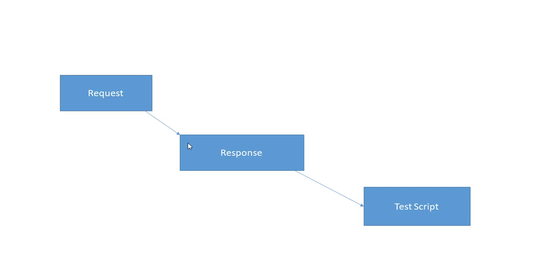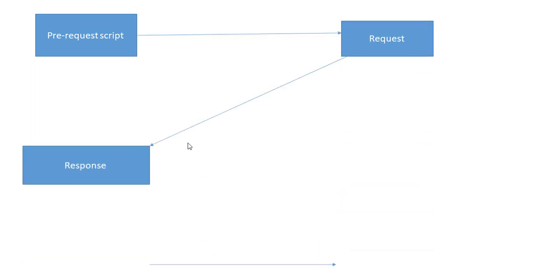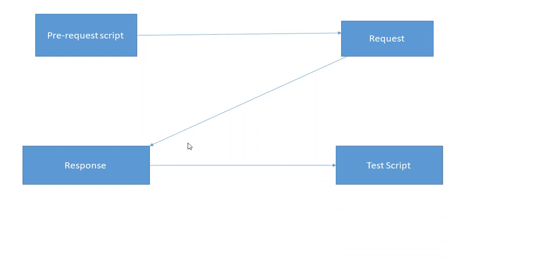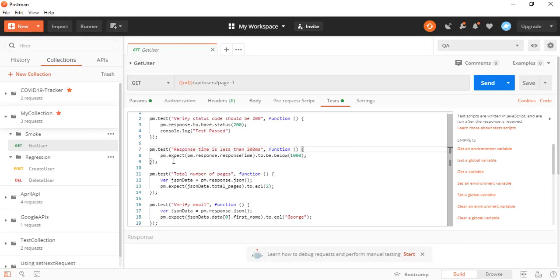When you add a pre-request script, the order changes. First the pre-request script executes, then your request executes, then you get the response, and finally your test script executes. So the only addition is that before running the request, the pre-request script runs and gives you the data.